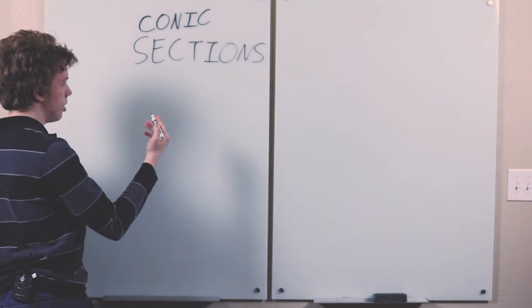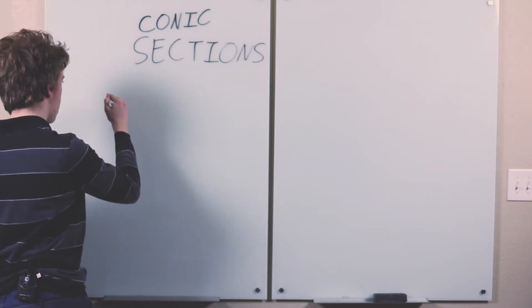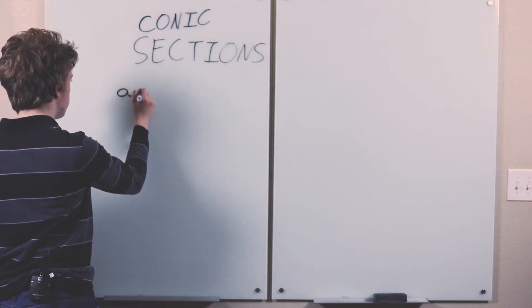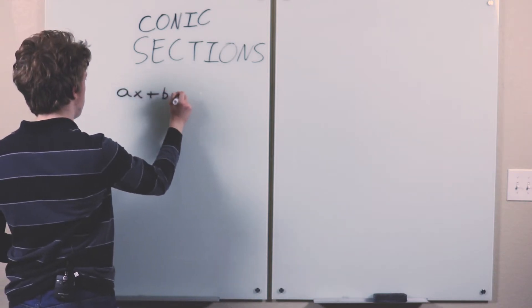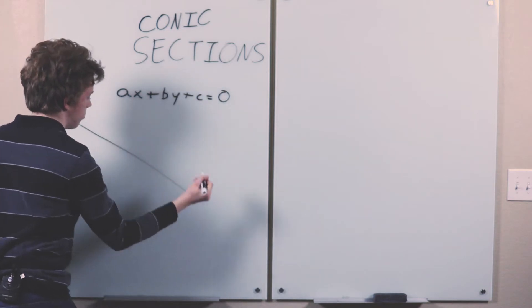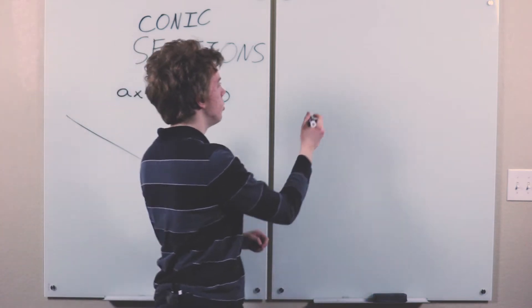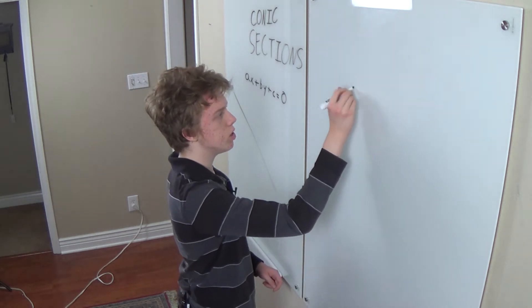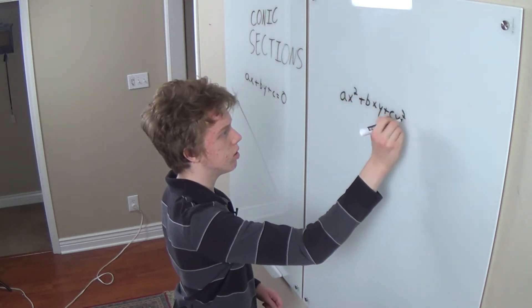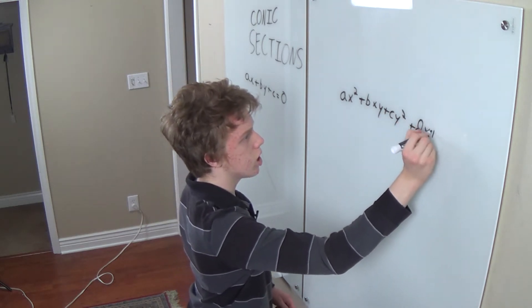One way is to think of it as analogous to how if you take a curve in the Cartesian coordinate plane of degree 1 in x and y, you get a line. And so analogous to that, what do you get if you take a curve of degree 2? You can have a conic section.